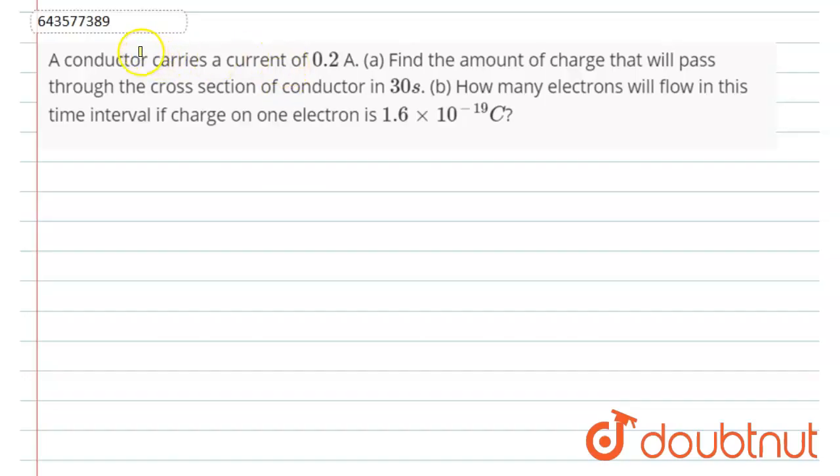In this video we are going to discuss this question: A conductor carries a current of 0.2 ampere. Find the amount of charge that will pass through the cross section of a conductor in 30 seconds. So let's solve.